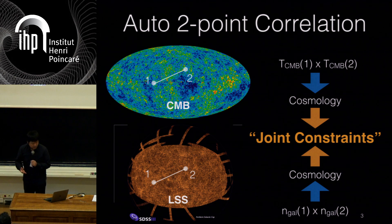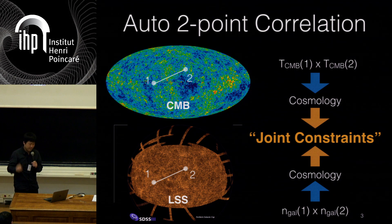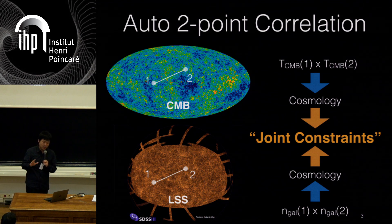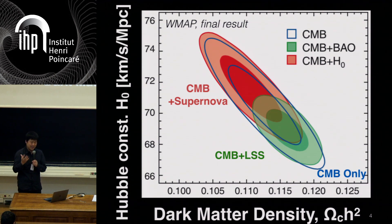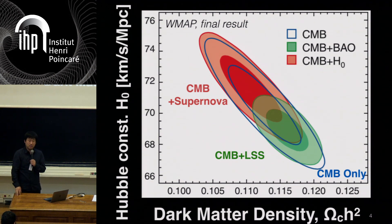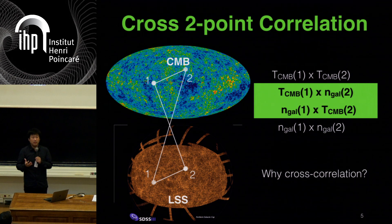So what is a 3x2pt analysis? Essentially, for many, many years and many papers, what we mean by joint constraints is: you take the auto-power spectrum of CMB, the auto-power spectrum of large-scale structure, and put them into the likelihood — ignoring the correlation between them. In this case, the green is CMB combined with BAO, and the red is CMB combined with H0. Luckily, CMB and BAO, and CMB and H0, are not very much correlated, so it makes sense to do it this way.